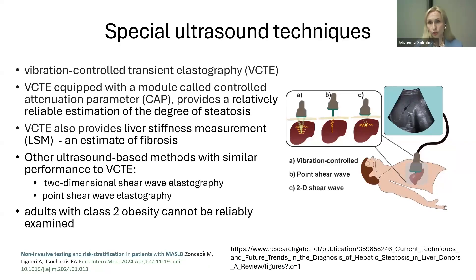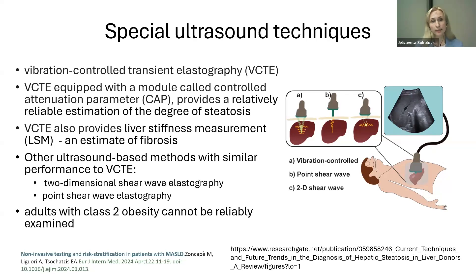Special ultrasound techniques also exist. Vibration-controlled transient elastography — especially when equipped with the controlled attenuation parameter (CAP) module — provides a relatively reliable estimation of steatosis degree, and liver stiffness measurement is also performed. Similar techniques include two-dimensional shear-wave elastography and point shear-wave elastography. However, sensitivity and specificity again decrease in adults with class 2 obesity and above.